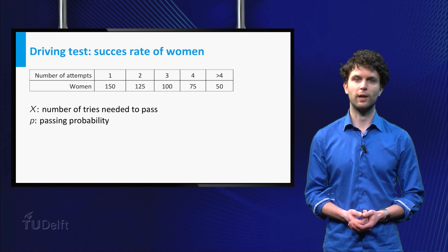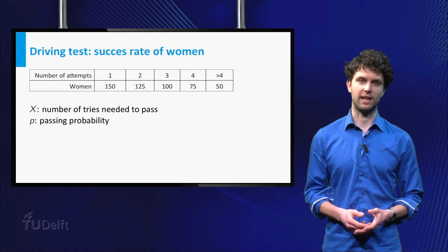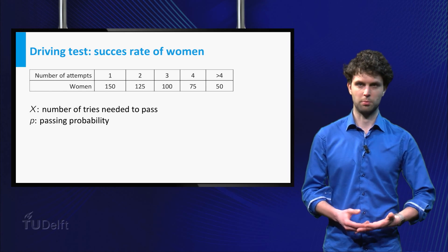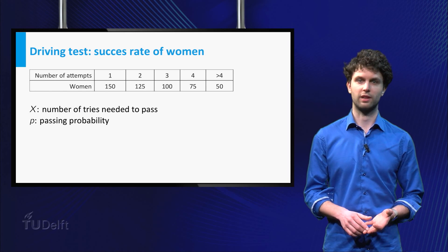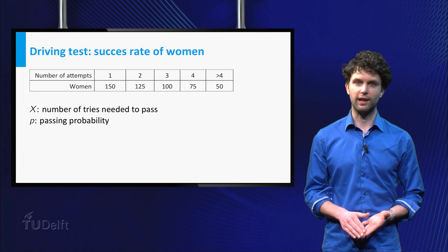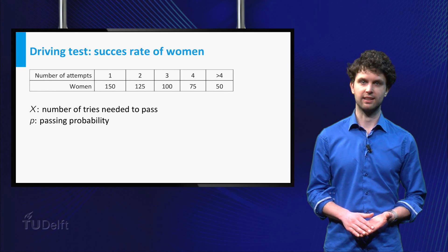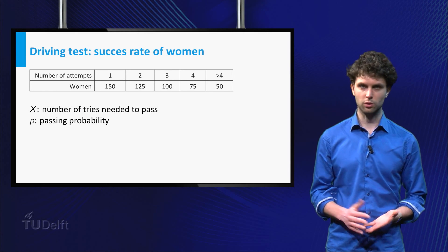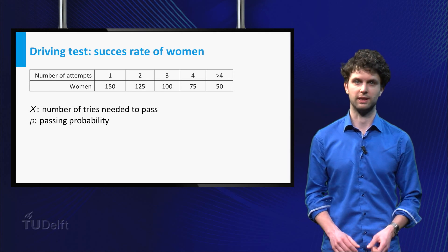Let us start by estimating the probability of passing the driving test for women. Denote by capital X the number of tries needed to pass for women. Suppose that every try is independent of the tries before, and that at each try the probability P of passing is the same.